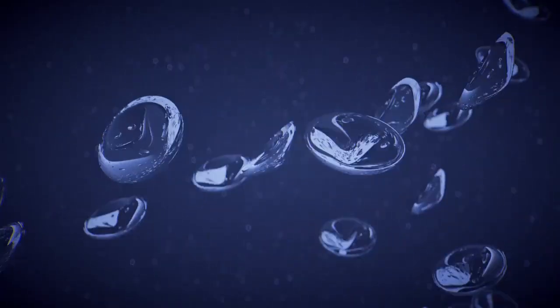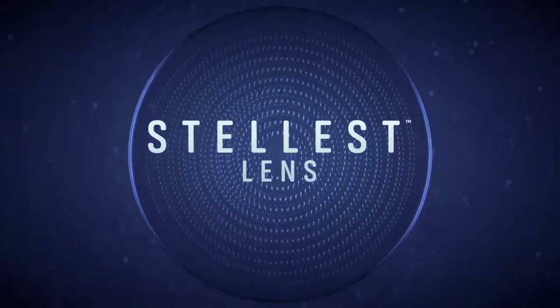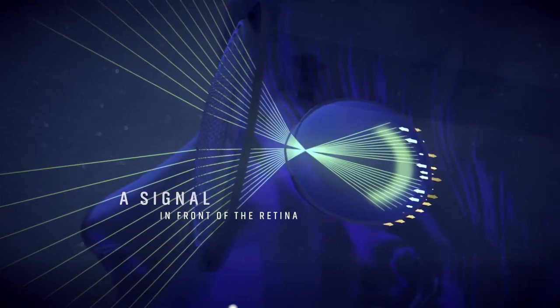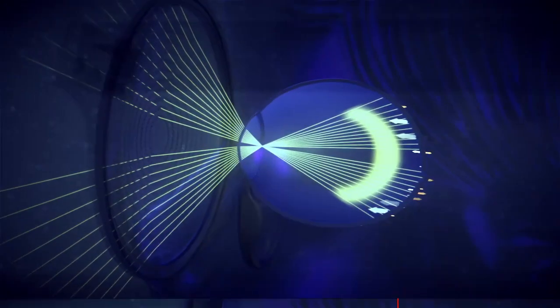Essilor now revolutionizes this state of fact and unveils the Stellis lens. The Stellis lens creates a signal into the eye that acts as a shield against eye elongation and therefore effectively slows down myopia progression.